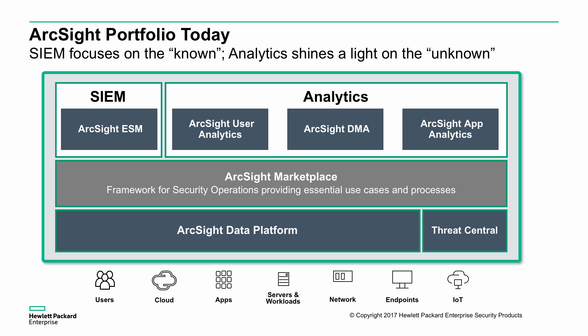SIEM, or Security Information and Event Management — specifically the ArcSight ESM solution — does a really good job of identifying the known. We know the kinds of indicators that tell us an attack is occurring, and ESM is great at real-time correlation focused on that. Analytics, on the other hand, works in the unknown environment — identifying unknown activity, anomalies, and unusual sets of things that are occurring. Analytics is incredibly powerful at doing that.